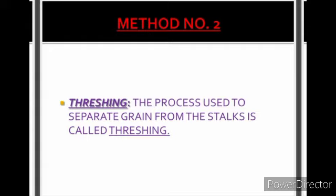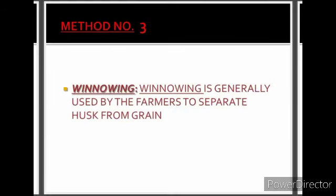Next is threshing. The process used to separate grains from the stalks is called threshing. This is used by farmers when their crops are fully grown and cut down — grains need to be separated from the stalks. A device called a thresher is used for large-scale production, as it takes very little time. For small-scale work, it can be done manually by a few people.